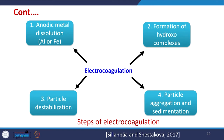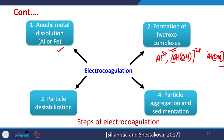The electrocoagulation process involves anodic metal dissolution, formation of hydroxyl complexes — such as Al3+, Al(OH)2+, Al(OH)2+ — and other species. Al3+ destabilizes particles, and once destabilization occurs there is a possibility of aggregation and settling down. These are the different steps in electrocoagulation.